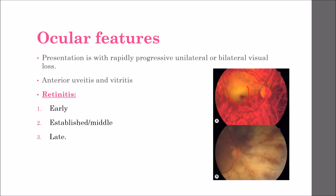Here you can see the deep infiltrates, and the central macular area also gives that appearance of a cherry red macula. The second stage is the established or middle stage, where the signs typically spread rapidly around the retina with very extensive full-thickness necrosis.